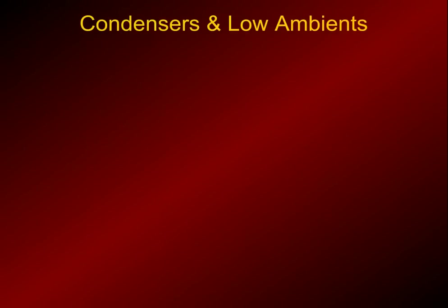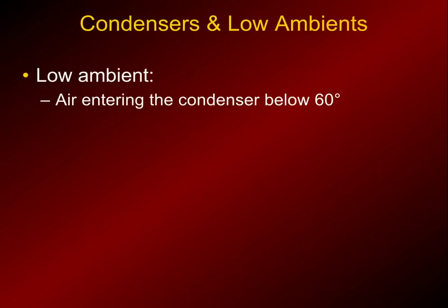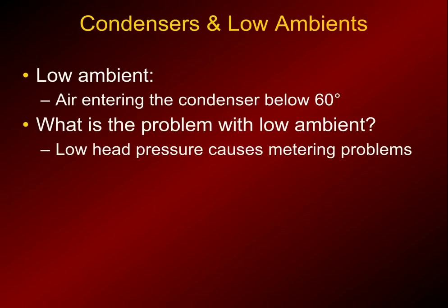In refrigeration you have to consider low ambient temperatures. In residential air conditioning we don't worry too much about that, but refrigeration is always cooling and always freezing, so no matter where you live they're going to be operating in low ambient conditions. When the temperature falls below 60 degrees Fahrenheit outside, the air entering the condenser causes problems with head pressure — low head pressure causes metering problems, especially in TXVs. What'll happen is the TXV will first starve the evaporator coil of refrigerant, then flood it, hunting back and forth, and this causes refrigeration issues.